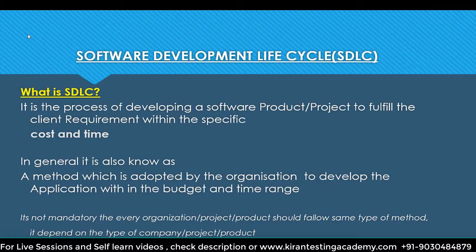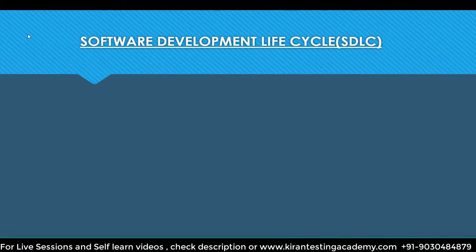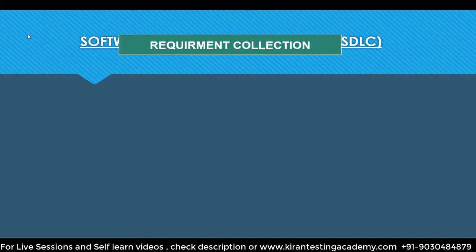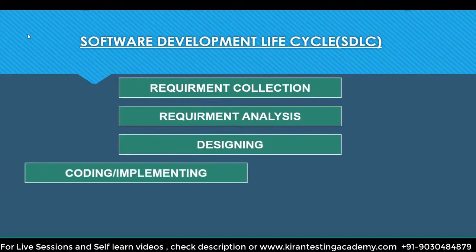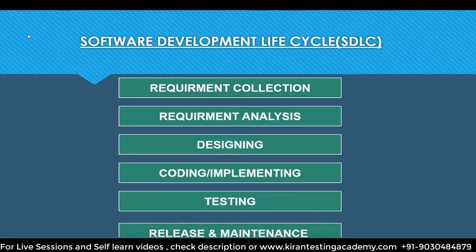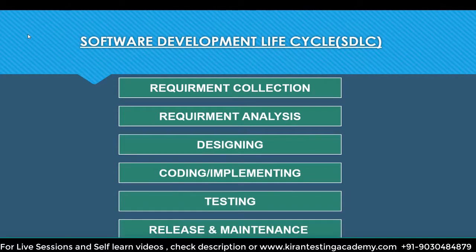SDLC is essentially planning. If you don't plan and start working directly, there are chances you'll drop somewhere in between. Proper planning will give you excellent results and take you to your goal. Now let's move on to the phases of SDLC. The common phases are: requirement collection, analysis, designing, coding, testing, release, and maintenance — six phases in total.